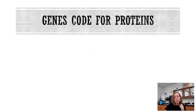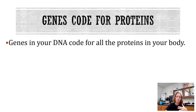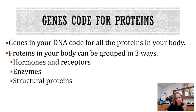Genes code for proteins. Genes in your DNA are going to code for all the proteins in your body — this is how you make everything in your body. The proteins in your body are grouped into three main categories: hormones and receptors, enzymes, and structural proteins.